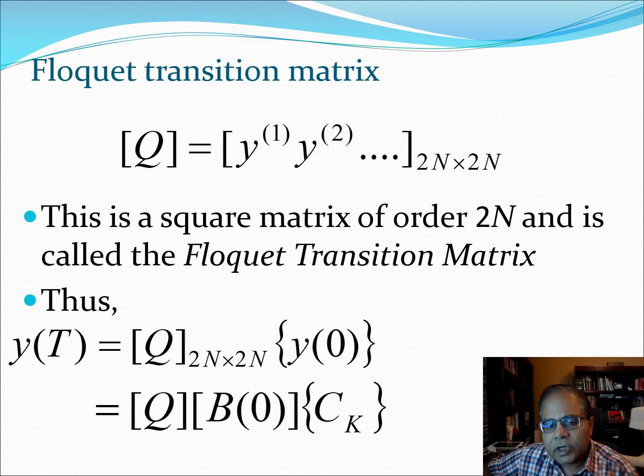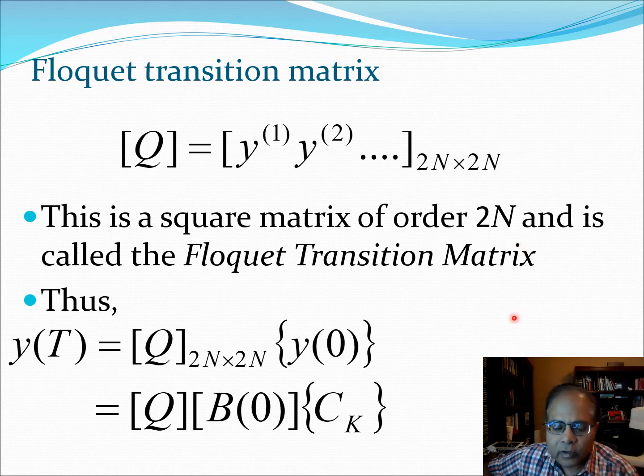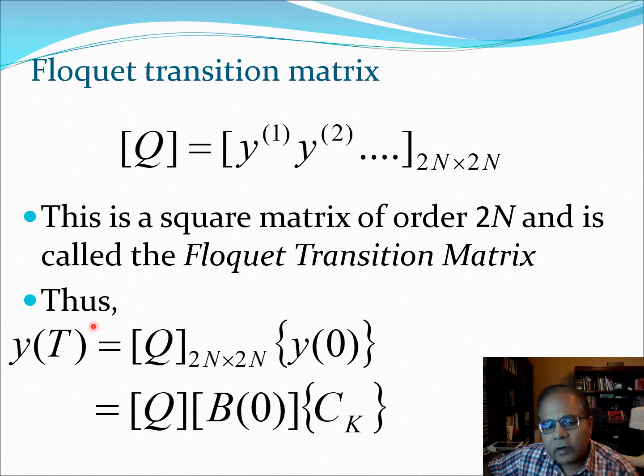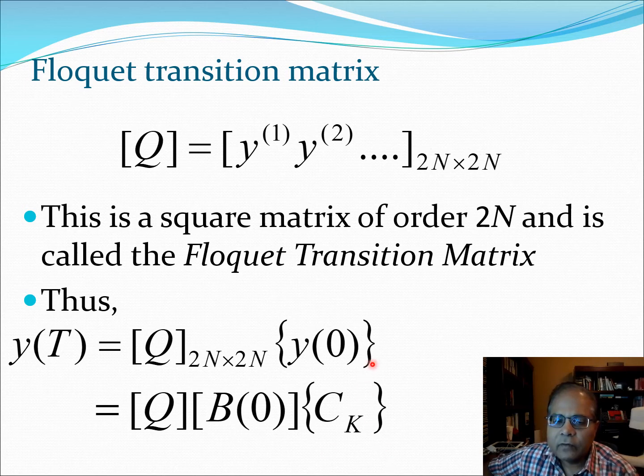Now, what this lets you do is that it lets you constitute a very important matrix known as the Floquet transition matrix. So the Floquet transition matrix Q has this form: Y one, Y two, all the way going on to 2N, and this square matrix has size 2N by 2N. This is known as the Floquet transition matrix and it plays a very important role in the stability of periodic systems. Now we can write our Y(T) as Q, 2N by 2N system, into Y zero. And then I can also write this as Q B zero into C_K from my definition of Y zero.